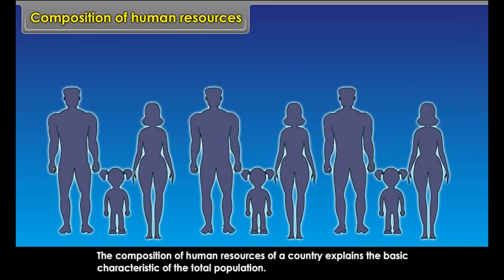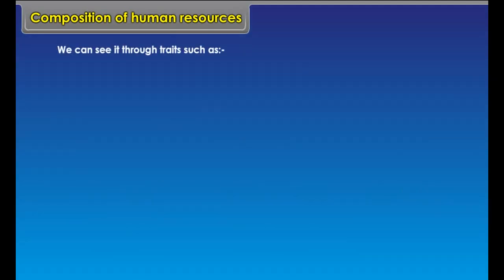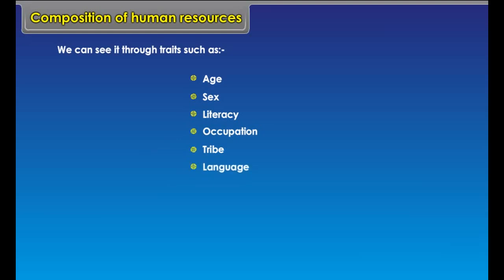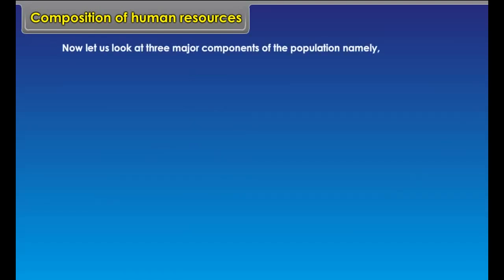Composition of Human Resources. The composition of human resources of a country explains the basic characteristic of the total population. We can see it through traits such as age, sex, literacy, occupation, tribe, language, and religion. Now let us look at three major components of the population, namely sex composition, age structure, and literacy levels.